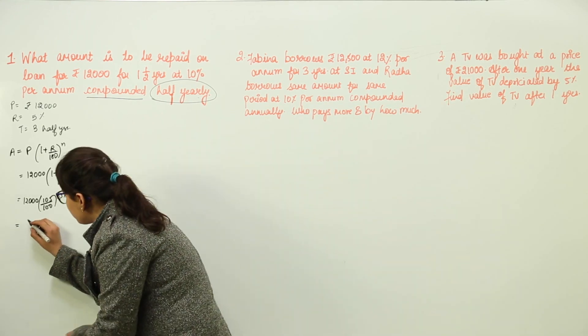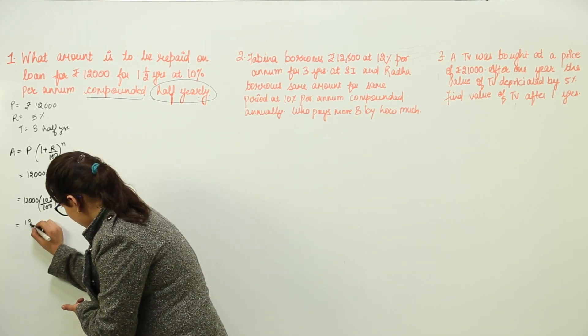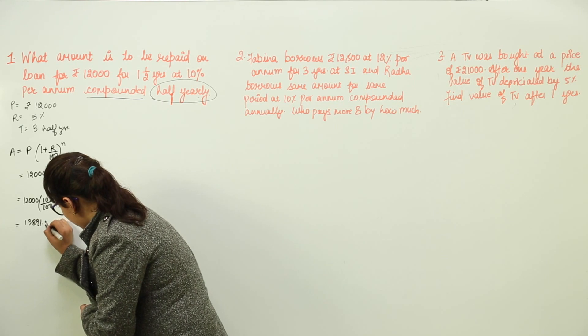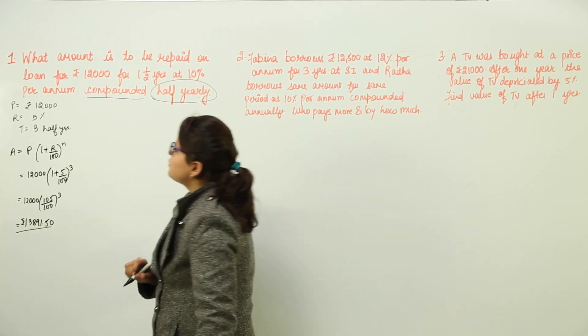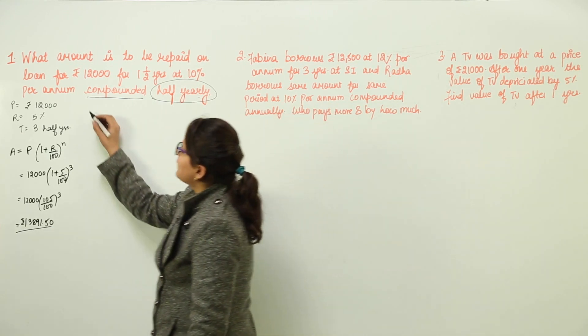Further solving would get me 13,891.50 as the amount for 3 half years.